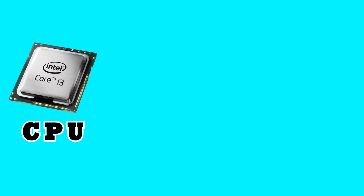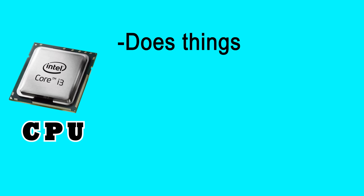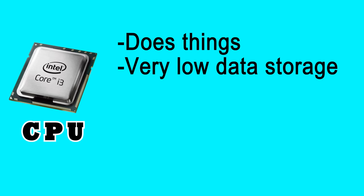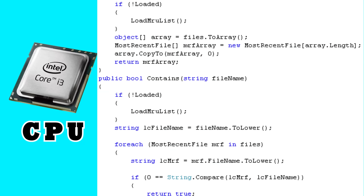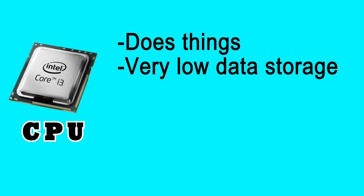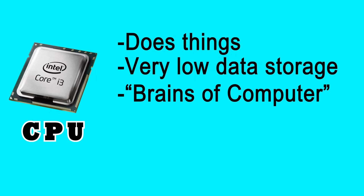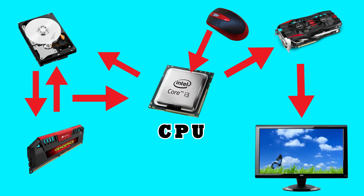The CPU is where your computer does things. It isn't really capable of storing very much data at all, but it's very good at doing things with data — quickly reading it, arranging it, doing the type of quick and massive calculations needed to run your programs. This is where most of your programs are essentially run from. Basically everything that happens in your computer goes through your CPU at some point.